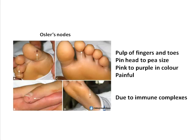Osler's nodes, named by William Osler in the beginning of the 20th century, as you can see in the diagram, are seen usually in the pulp of the fingers or toes — you can just remember the alphabet P. The size varies from pinhead, that is maybe 2 millimeters, to half a centimeter in size.